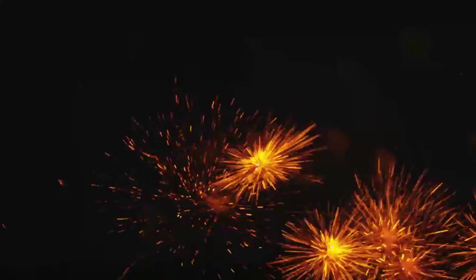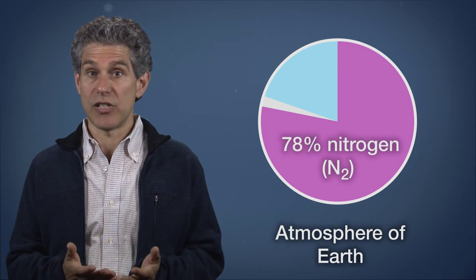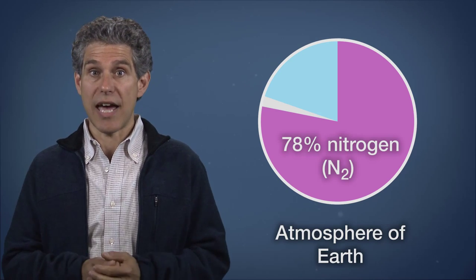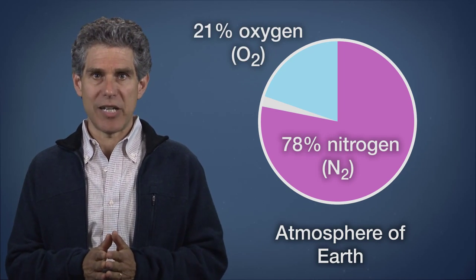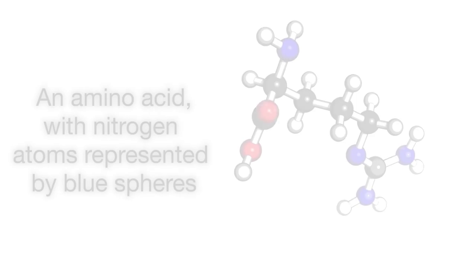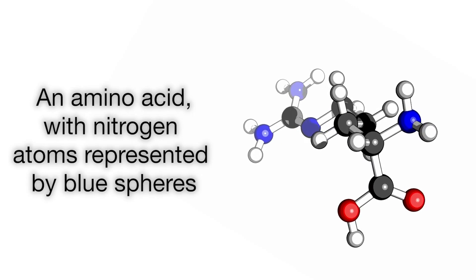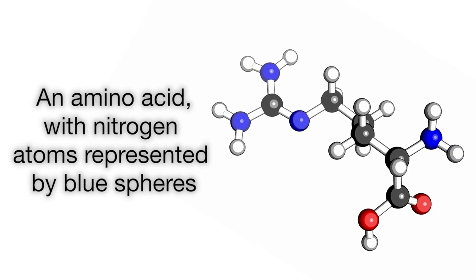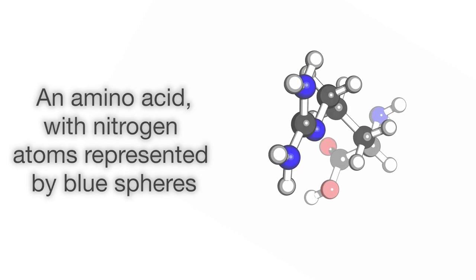Nitrogen is the most abundant element in the atmosphere. Approximately 78% of our atmosphere is nitrogen, N2 gas. Oxygen is the second most abundant element in our atmosphere at 21%. Nitrogen is used to form amino acids, the building blocks of proteins. Therefore, nitrogen is necessary to both plants and animals.